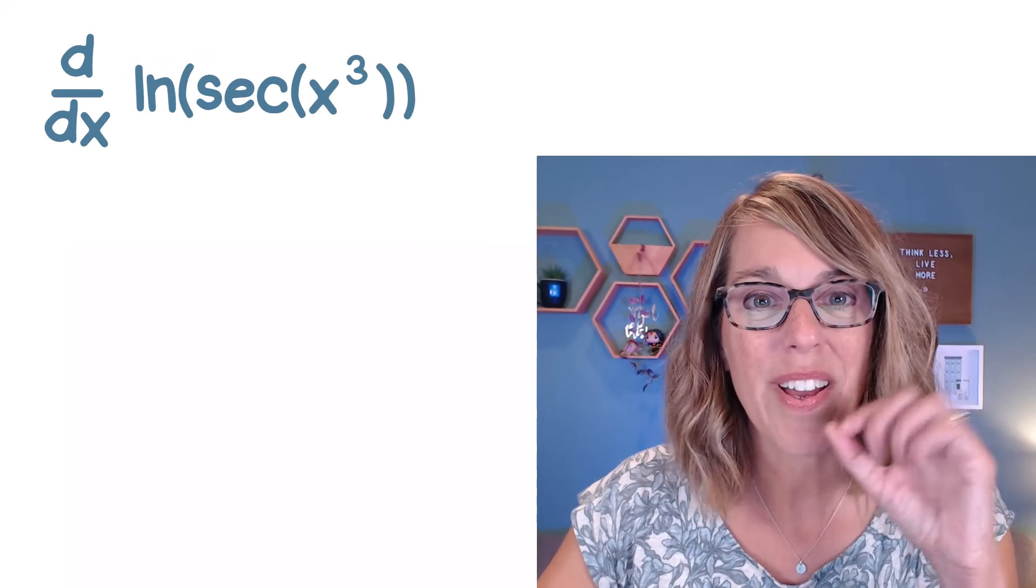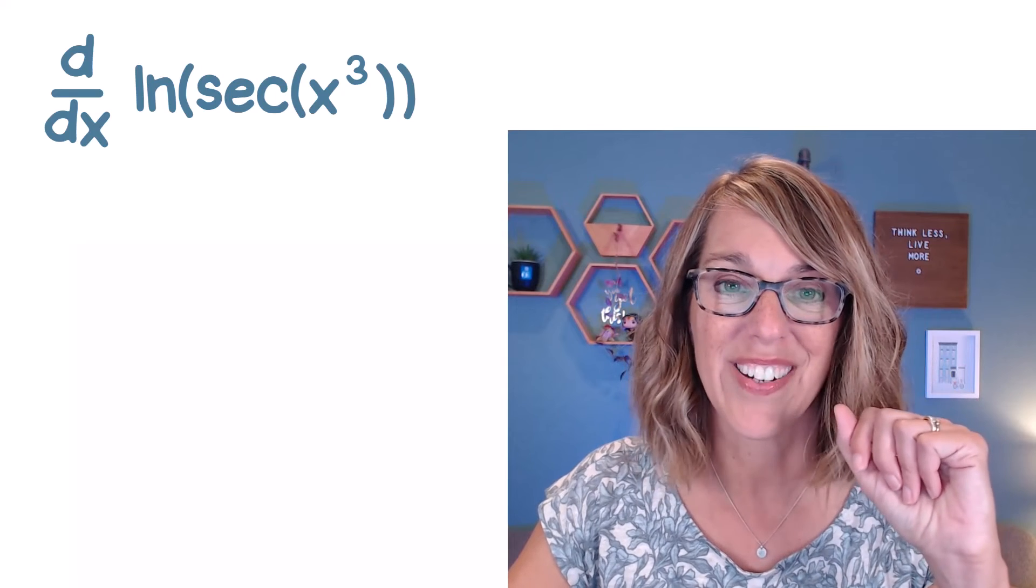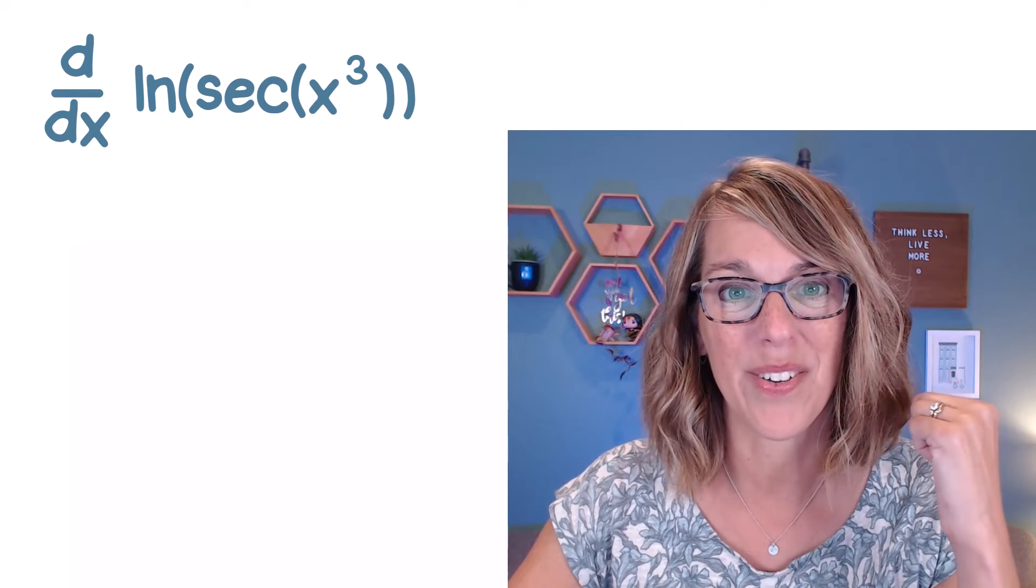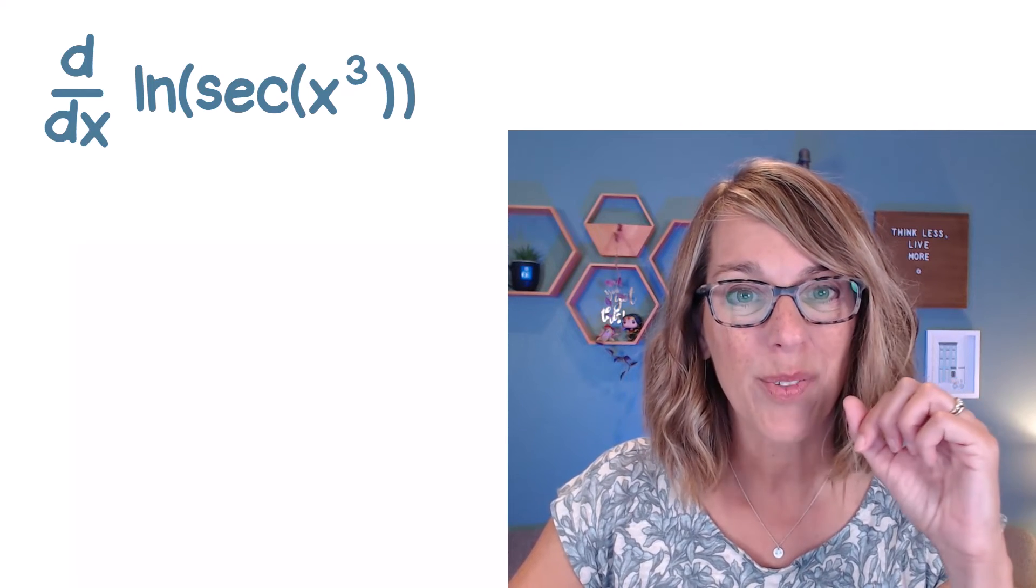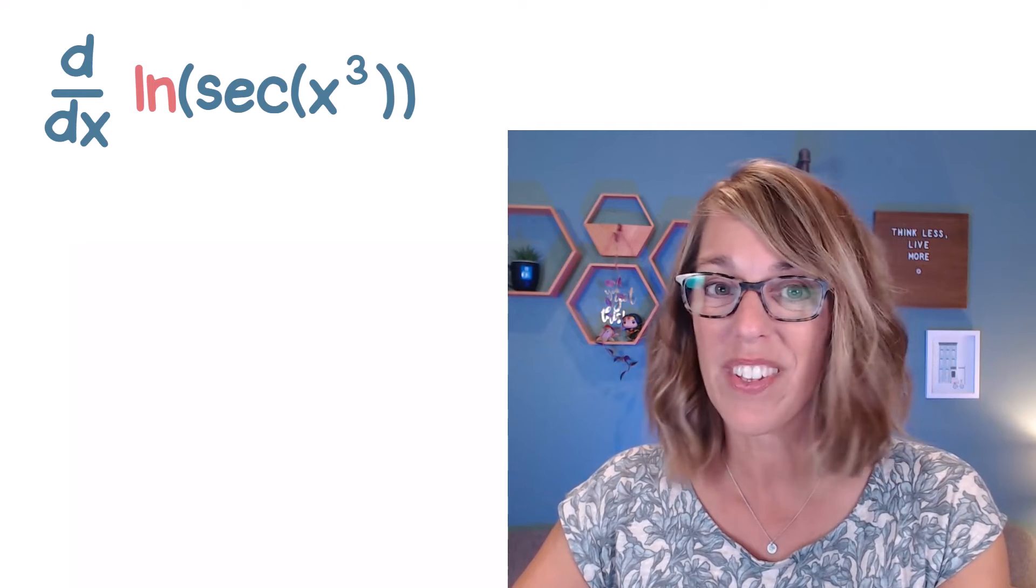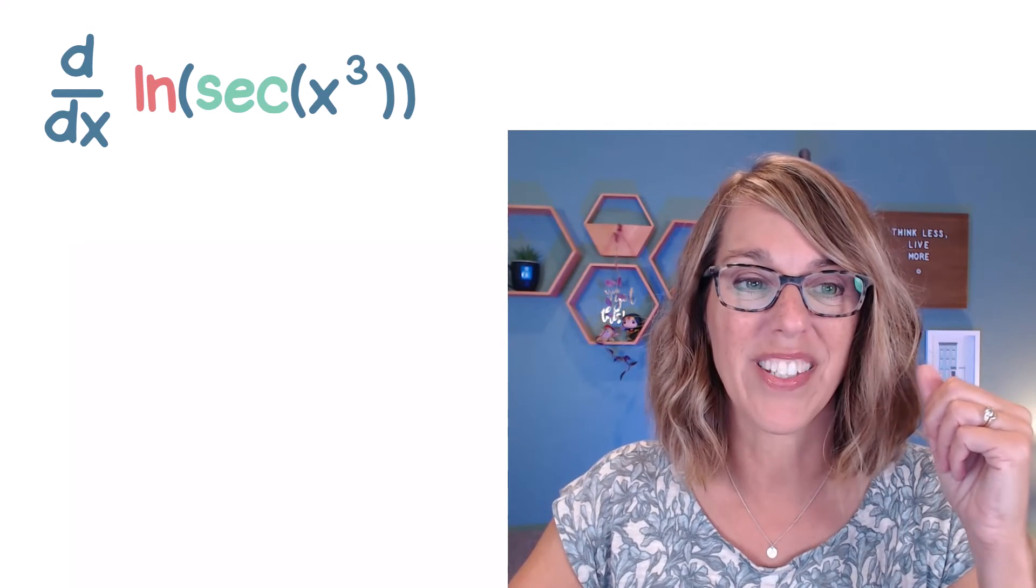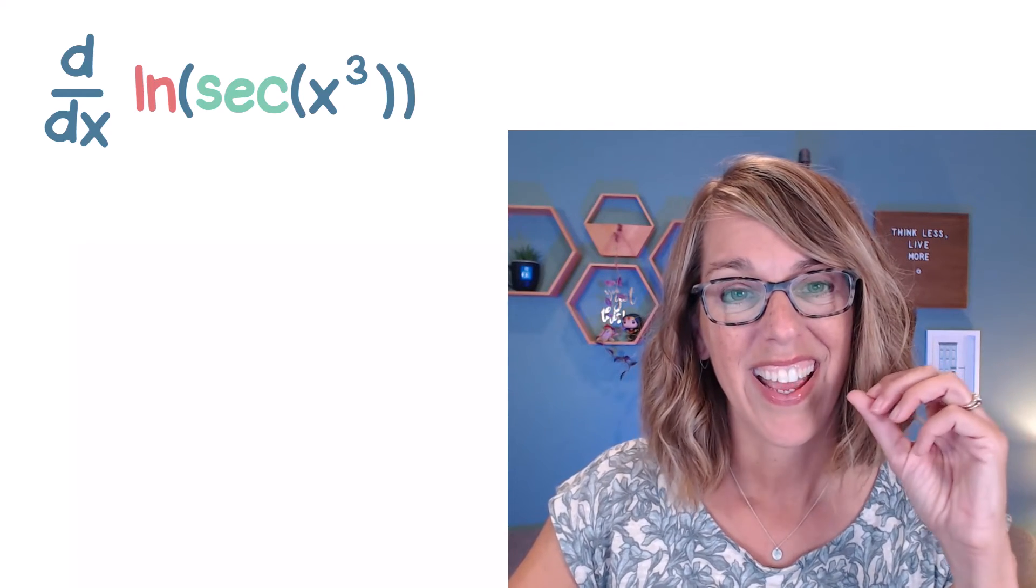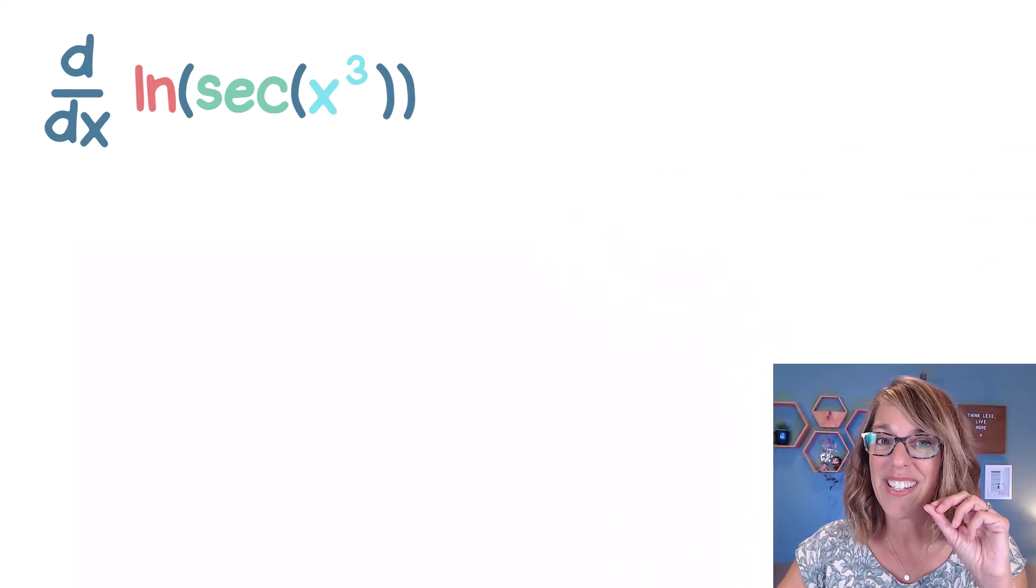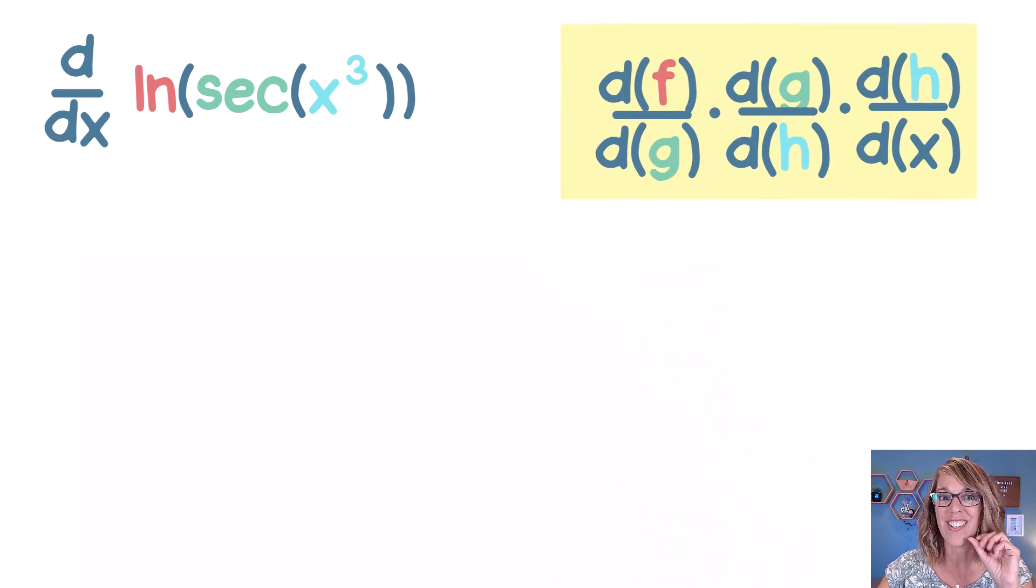In this next one we've got three different layers. Can you identify the outer, the middle, and the innermost layer? Well here's what we've got. We've got the natural log as the outermost function. The next one moving inside those parentheses is my secant and the innermost function is x cubed. So instead of the chain rule for two functions, I need the chain rule instead for three functions.